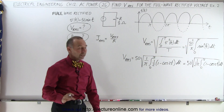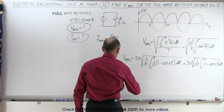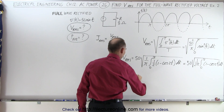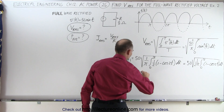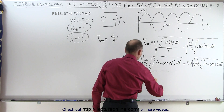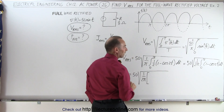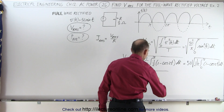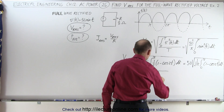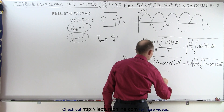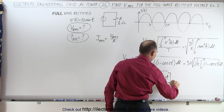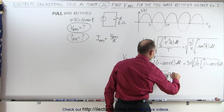Now we're ready to integrate. VRMS is equal to 50 times the square root of one over two pi, times the integral of 1 dt which is t, and the integral of minus cosine of 2t which is minus one half times the sine of 2t, evaluated from zero to pi.